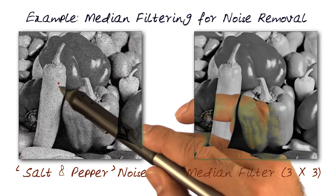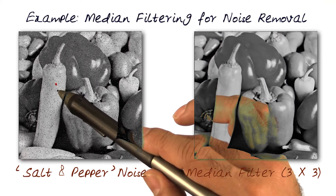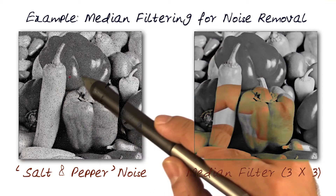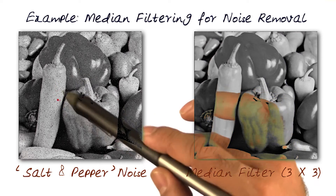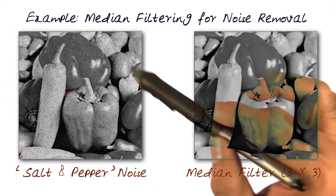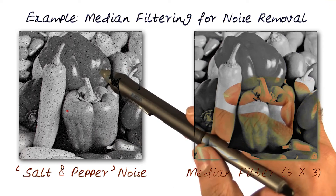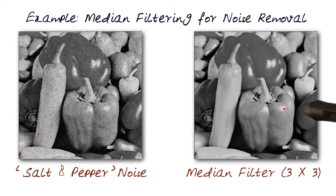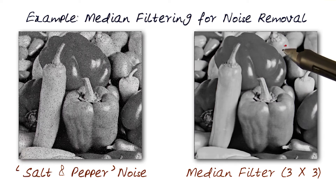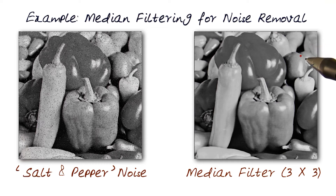That's why it's called salt and pepper — many blacks and many whites, scattered all over the image in a random manner. We don't know where they are. But if you apply a median filter to it, you'll notice that all of the salt and pepper noise is gone.